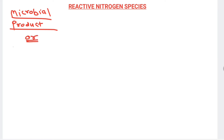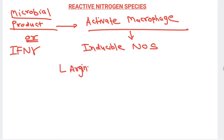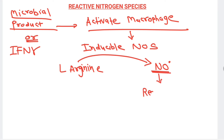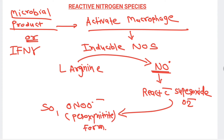Regarding reactive nitrogen species: microbial products or cytokines such as interferon-gamma activate macrophages. After macrophage activation, the enzyme inducible nitric oxide synthase (iNOS) is induced, converting L-arginine into nitric oxide. This nitric oxide then reacts with superoxide anion to form peroxynitrite, which is also a very powerful microbicidal agent.